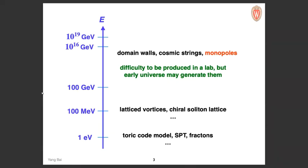I'm only thinking about 3+1 dimensions. In general, you can think about domain walls, cosmic strings, and monopoles. For example, you have axion strings, with lots of discussion about that in part of the physics community, and there are also things like domain walls.